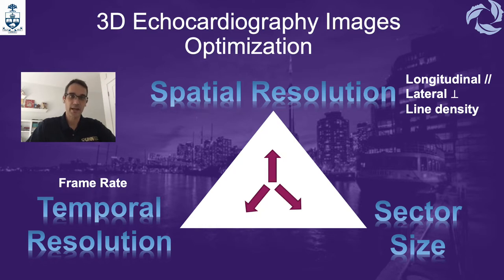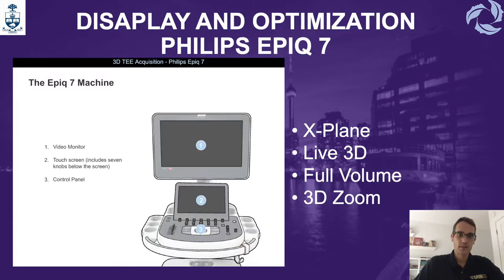You can't have all three of them. If you get too much temporal resolution, you're going to lose spatial resolution and sector size. If you get too much size, you're going to lose spatial and temporal resolution. So, understanding that, we are going to start with the display and optimization in the Philips Epic 7.